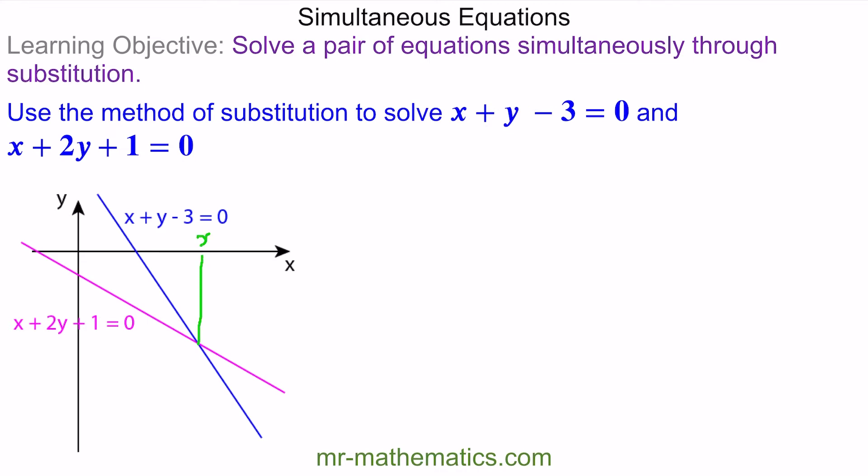We're going to find the x value and the y value. I'll need to begin by writing this equation in terms of x. So we have x equals 3 minus y.